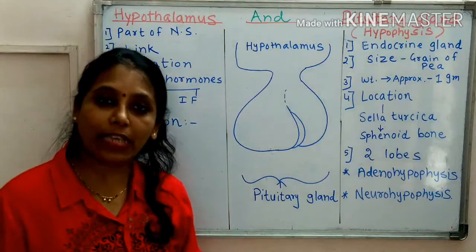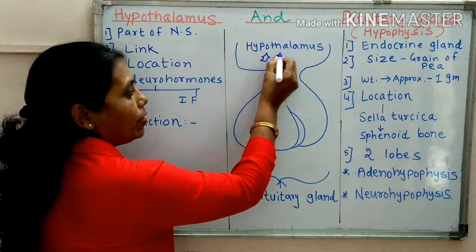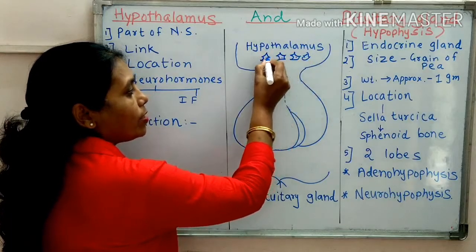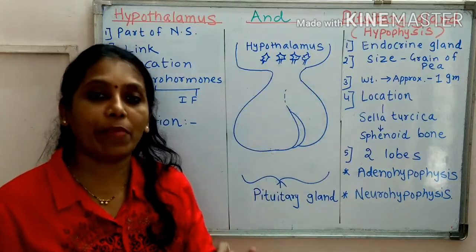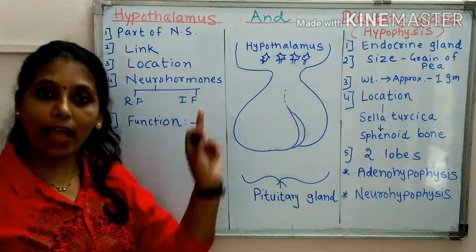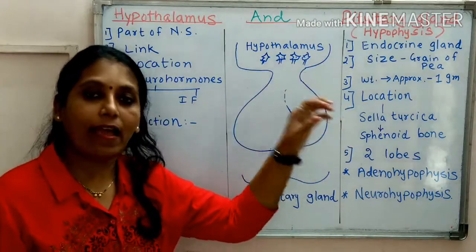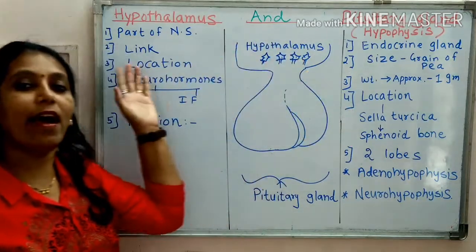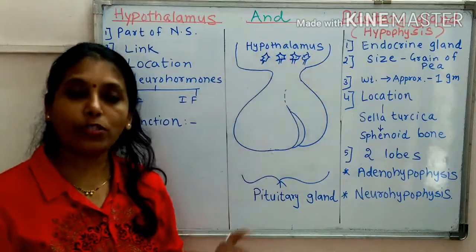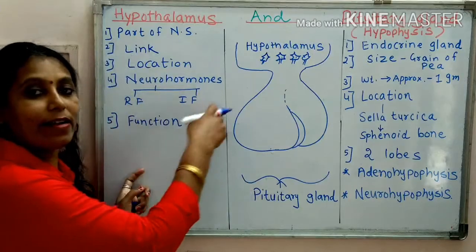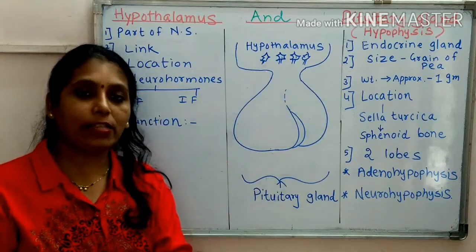The function of hypothalamus: as hypothalamus is the part of the brain, it consists of neurons — these are the cytons and these are the axons. These neurons secrete certain chemicals and these chemicals are called as neurohormones. They are called neurohormones because neuro means nerve cell, and as these chemicals are secreted by nerve cells, they act as messengers. These neurohormones are of two categories: one is called releasing factor and another is called inhibiting factor.